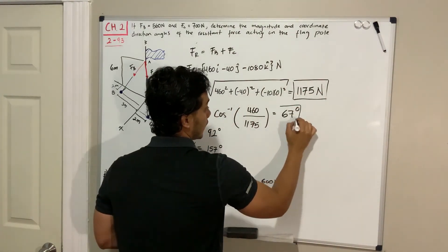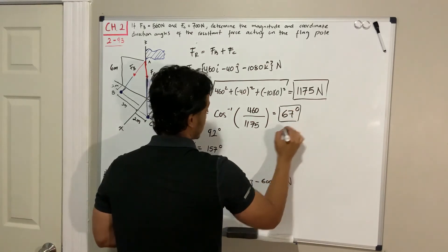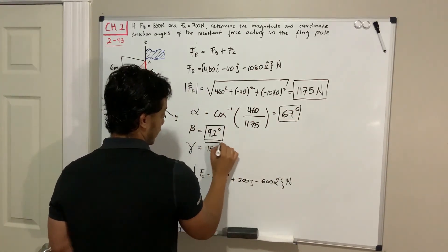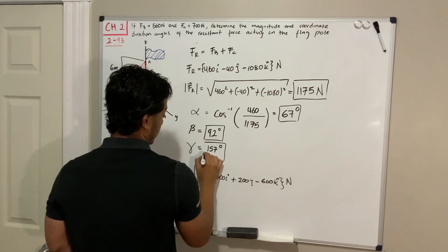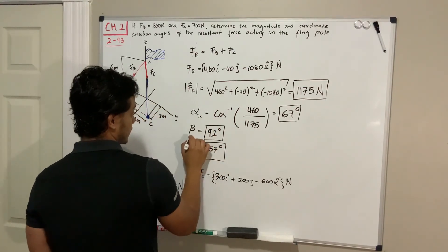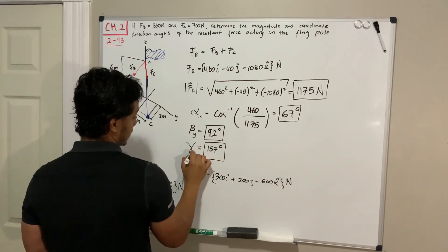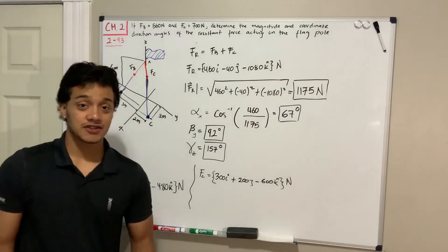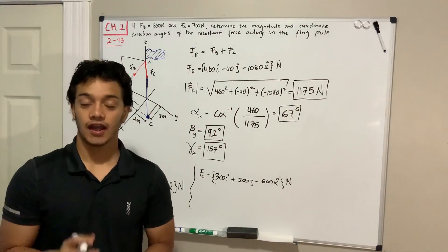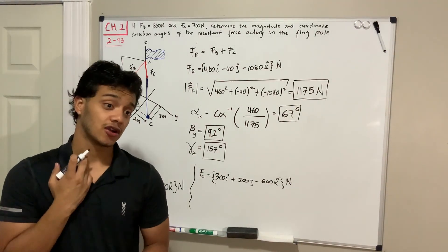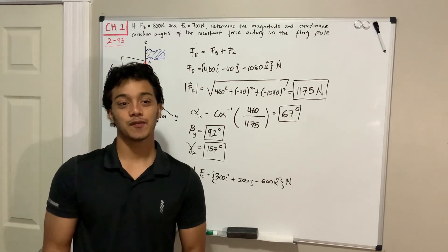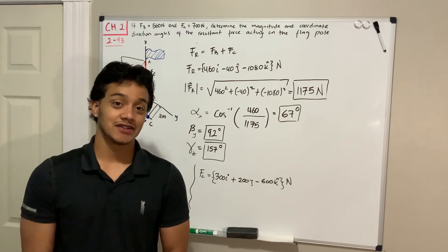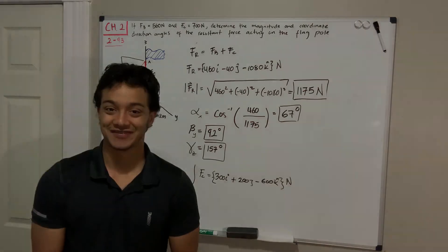So we found the magnitude of the resultant — 1175 newtons — and the coordinate direction angles: alpha equals 67 degrees for x, beta equals 92 degrees for y, and gamma equals 157 degrees for z. Thank you guys for watching. If you have any comments, suggestions, or questions about the problem, please let me know and I'll see you in the next video.